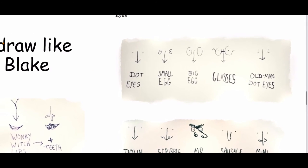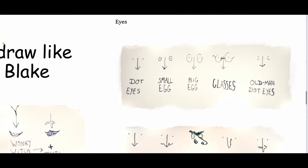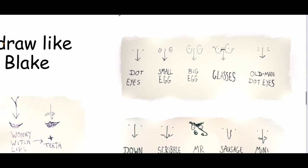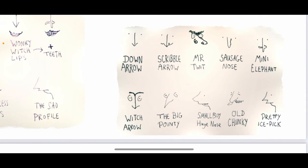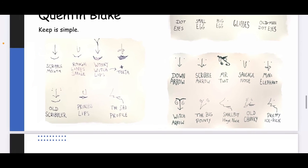We can also see some examples of Quentin Blake's eye drawings — again very simple, without lots of detail. You don't see big eyelashes or lots of detail on the nose, but it's still very effective. The old man eyes show lines underneath which suggest wrinkles. And here we have some noses — you might notice some of these characters. Mr Twit has big nostrils, quite a big nose, and a big bushy eyebrow on top of his eyes.